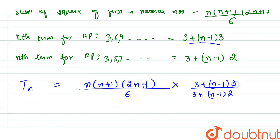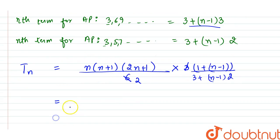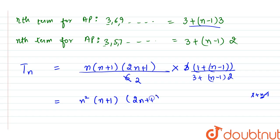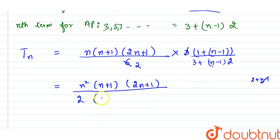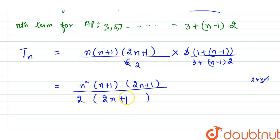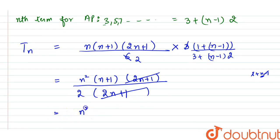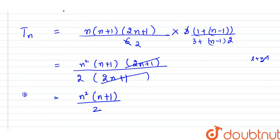Taking 3 common from the numerator term [3 + (n−1)·3], the 3 in the numerator cancels with the 6 in the denominator. The factor [1 + (n−1)] simplifies to n. The denominator [3 + (n−1)·2] expands to 3 + 2n − 2 = 2n + 1. So (2n+1) cancels with (2n+1) in the numerator, and we are left with Tₙ = n(n+1)/2, which expands to n³/2 + n²/2.